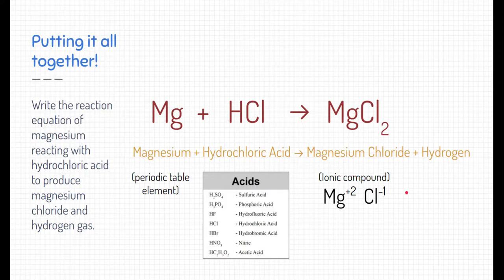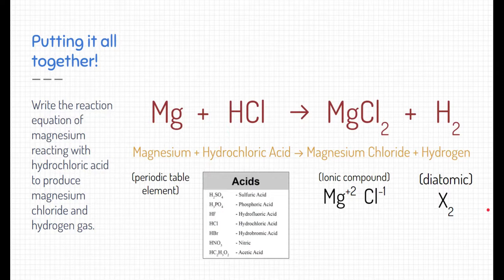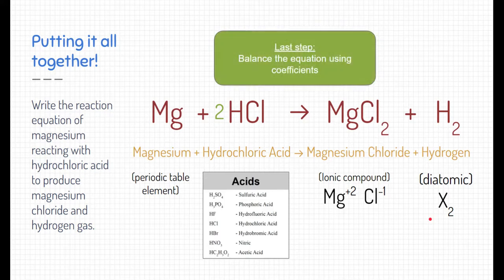Last is hydrogen — another pure element, but this one is special: it's diatomic, so we write it as H2. Now the reaction is written, but we're not quite finished. We talked in another module about balancing chemical reactions, and we need to balance this one too. We put a coefficient of two in front of hydrochloric acid so that the reactants and products balance each other. Balancing is always the last step — write each substance correctly first, then add coefficients.